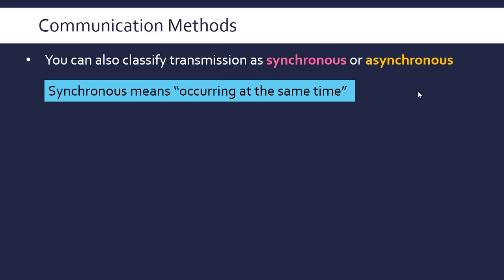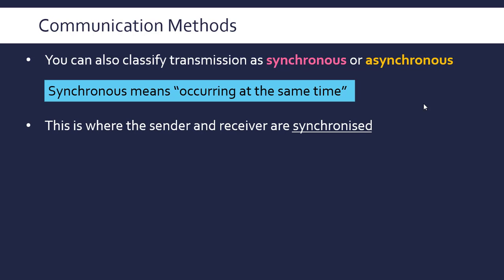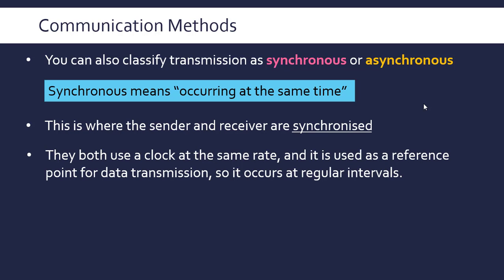Synchronous as a term means occurring at the same time — think of synchronised swimmers or synchronised divers where all their actions occur simultaneously. For this communication method, the sender and receiver are kept synchronised throughout, done by using a clock at the same rate, essentially the same clock signal or a replica. This is used as a reference point, meaning transmission occurs at regular intervals.